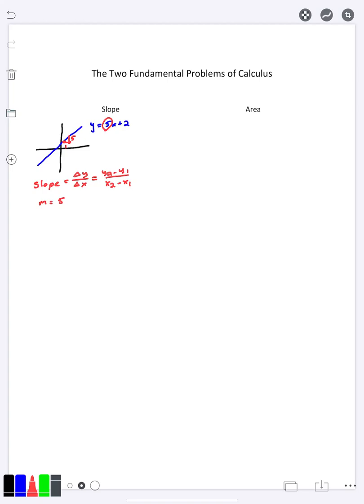The problem comes in when you don't have a straight line anymore. Let's say you have something like a parabola here. Right away, I hope you agree with me that there's no way to give a slope number to this because when you're on the right side of the graph, as you go to the right you're going to go up.